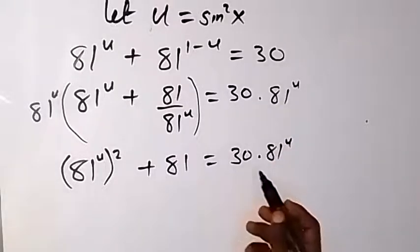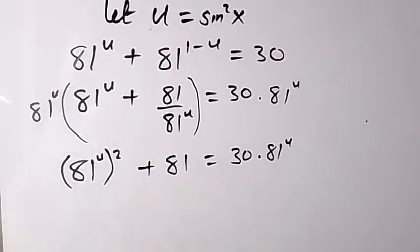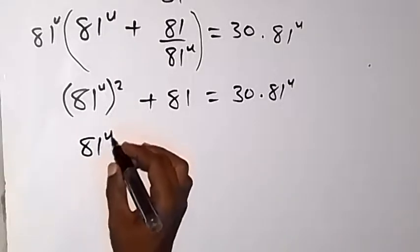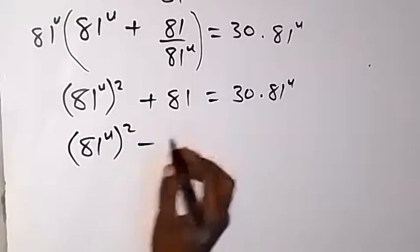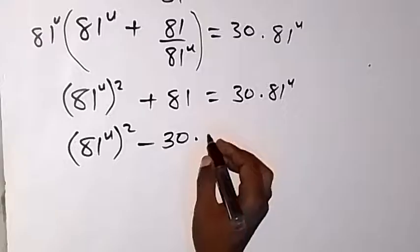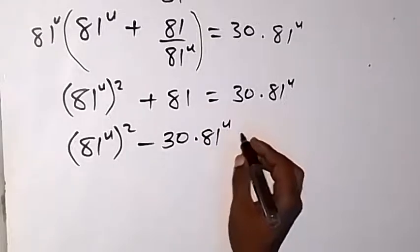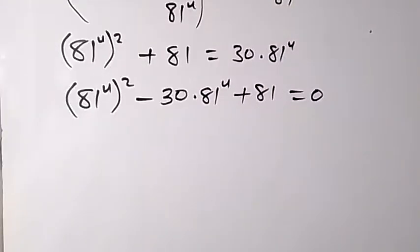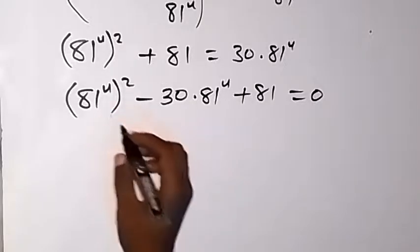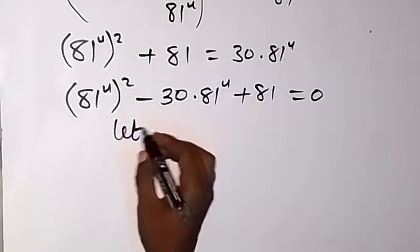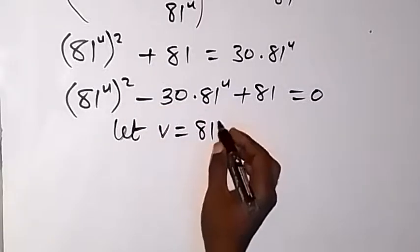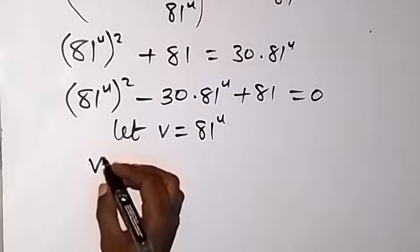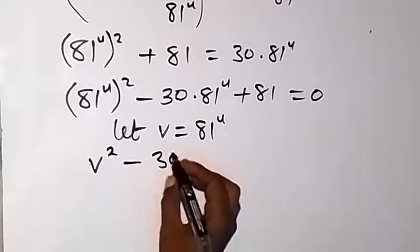We bring 30 times 81^u to this side to form a quadratic equation. We have (81^u)² minus 30 times 81^u plus 81 equals 0. Let v equal 81^u, and substituting v in place of 81^u we have v² minus 30v plus 81 equals 0.